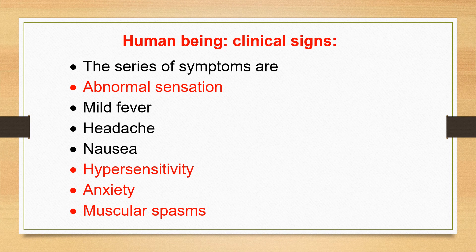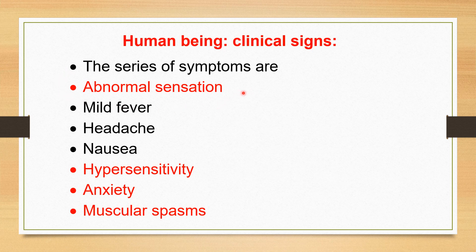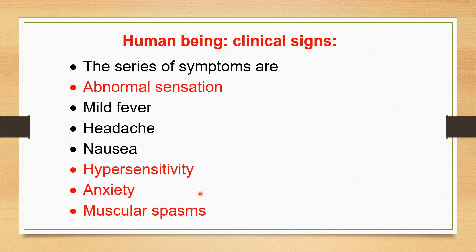Now we see the clinical signs of rabies in human beings — this is important for the owner, attendant, clinician, and other persons. The human being feels some abnormal sensation of their senses. Mild fever is observed, which is not seen in animals. There is headache due to anxiety and encephalitis. The human being feels nausea, excitation, and hypersensitivity. The human becomes very anxious and muscular spasms are very commonly observed.